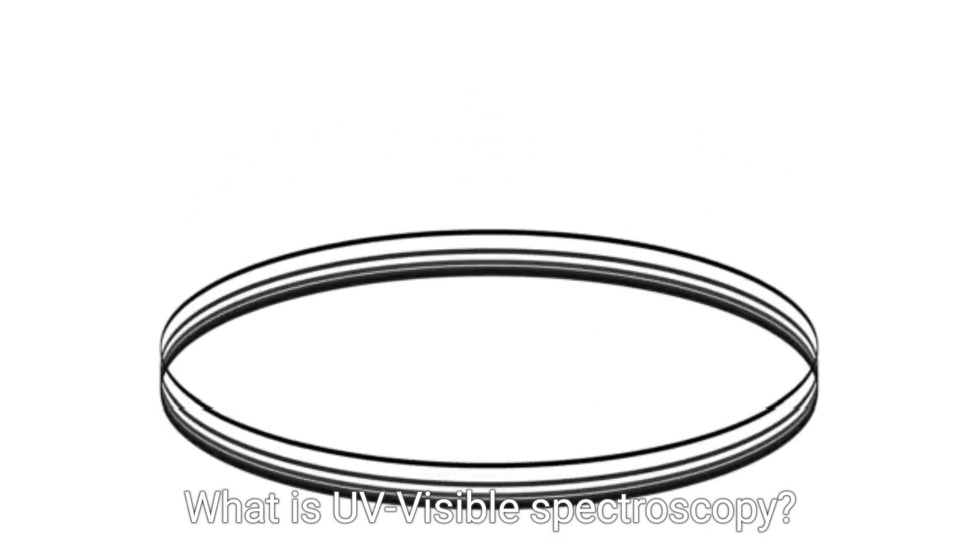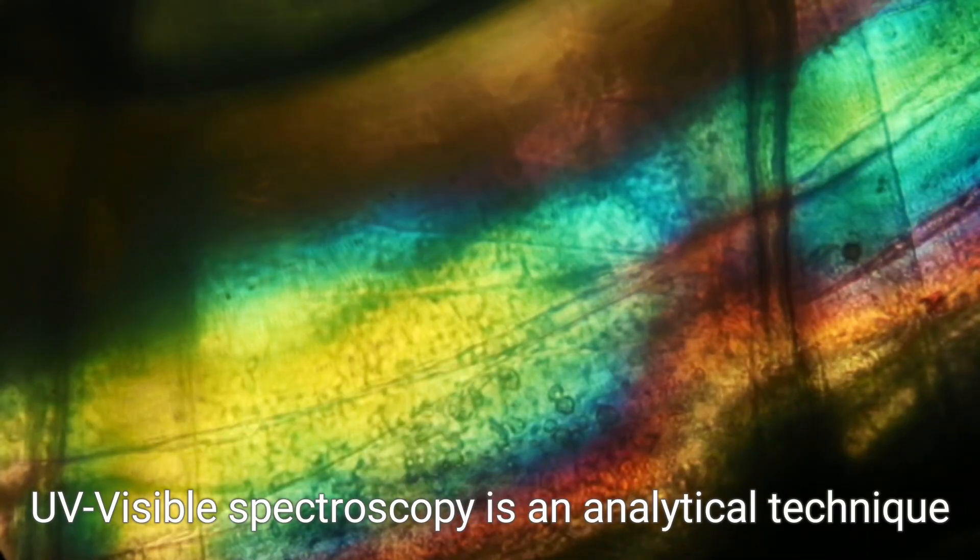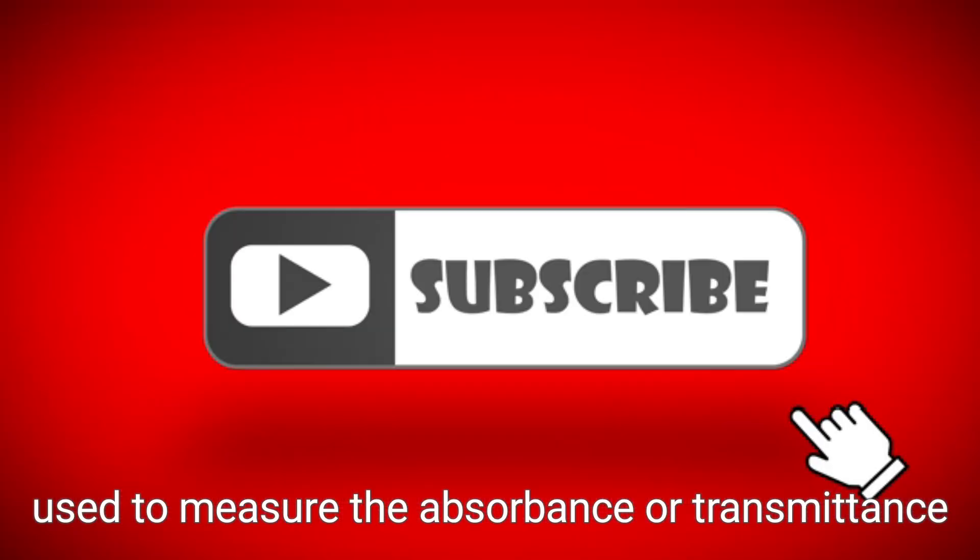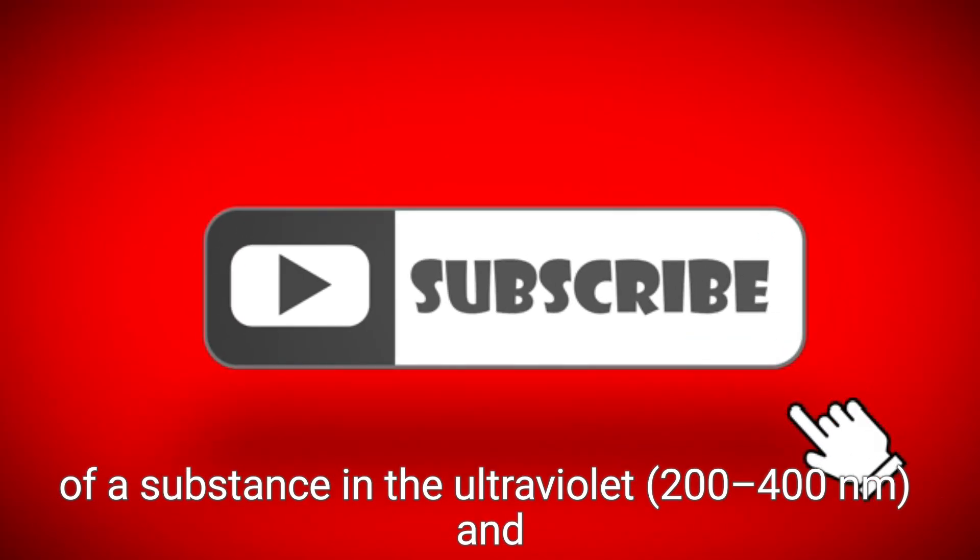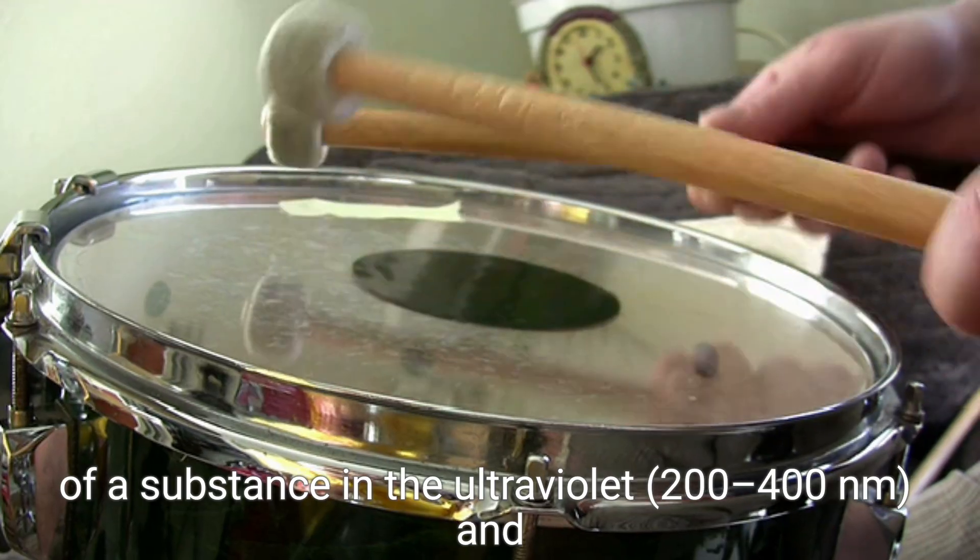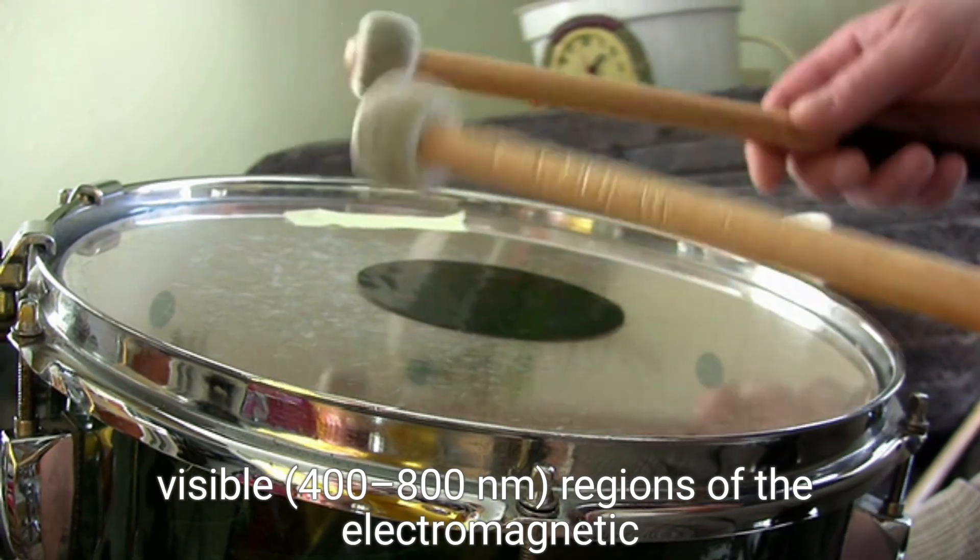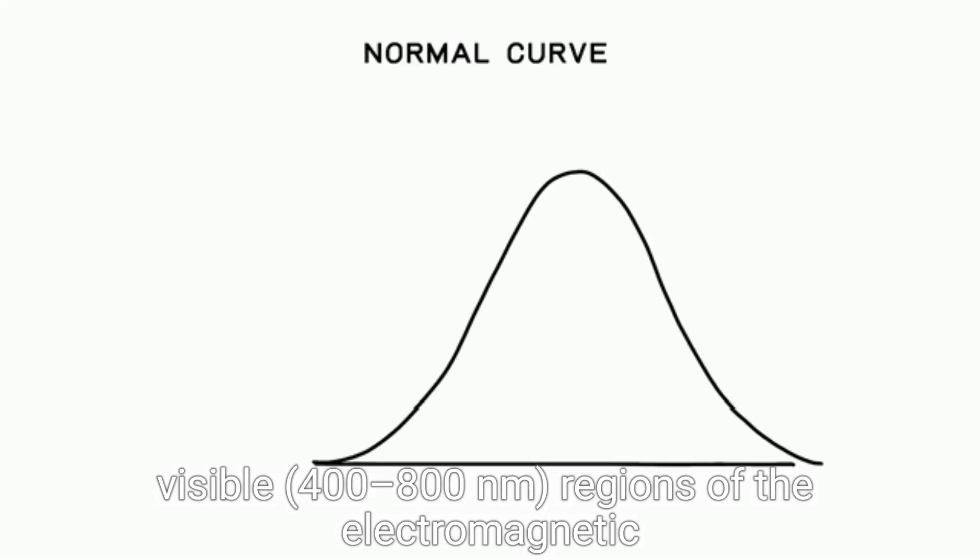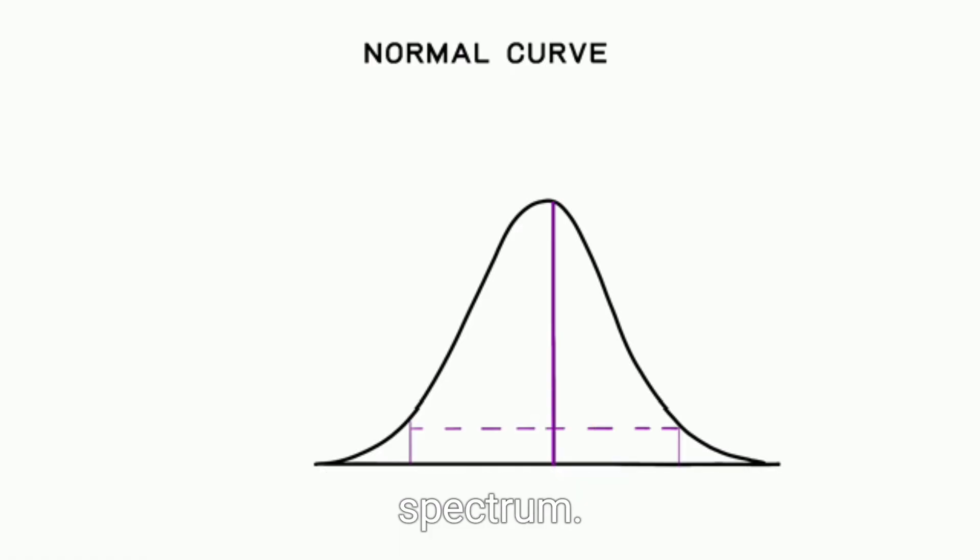What is UV-visible spectroscopy? UV-visible spectroscopy is an analytical technique used to measure the absorbance or transmittance of a substance in the ultraviolet 200-400 nanometers and visible 400-800 nanometers regions of the electromagnetic spectrum.